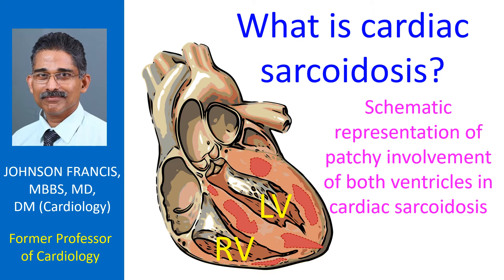Sarcoidosis is an inflammatory disorder which can involve multiple organs like skin, lymph nodes, lungs, eyes and brain, in addition to the heart. Involvement of the heart can occur in about one fourth of those with sarcoidosis.